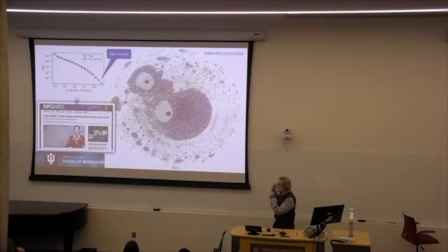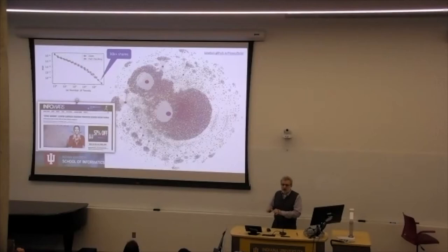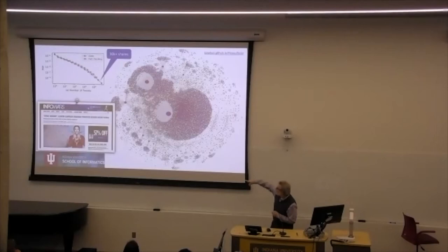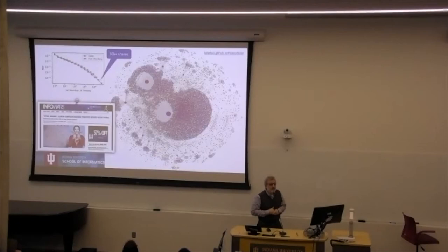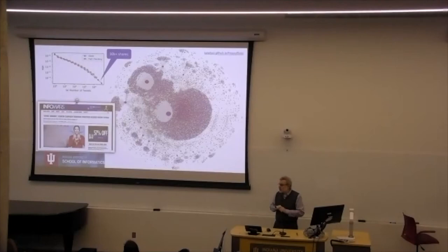This network is just for that one article. The size of a node represents how influential that account was in being retweeted, just in the context of this one article. We recognize that some nodes are very influential — the source InfoWars and associated accounts. But we also see nodes on the periphery that are influential and colored in red, representing what we believe are bots. This is one way bots can be used to amplify misinformation — they inject the message and make sure many people see it.